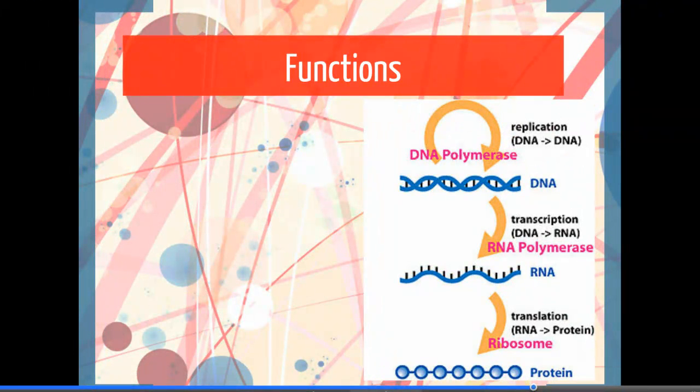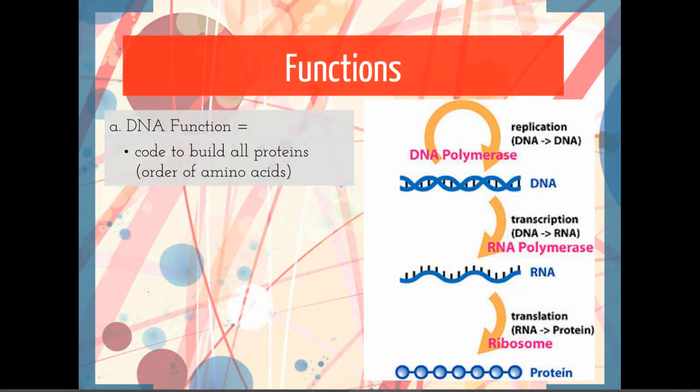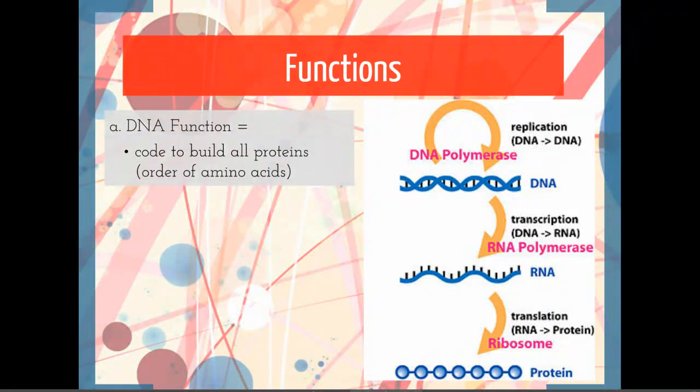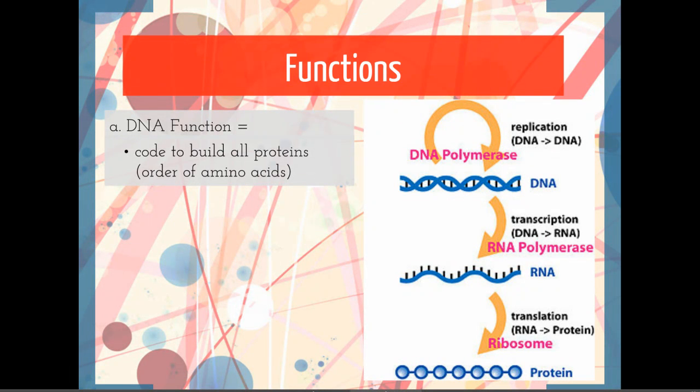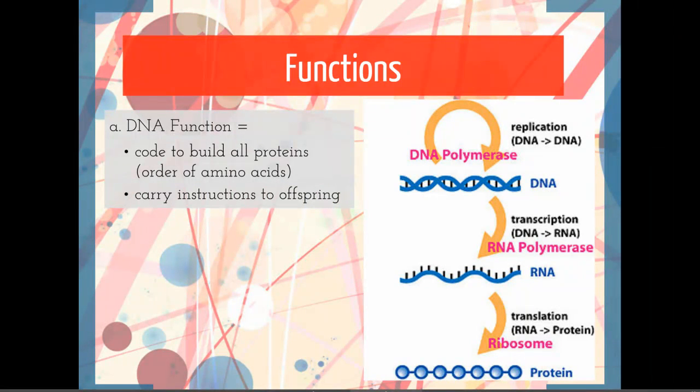When we look at the function of DNA and RNA, DNA is going to be the code to build all the proteins. We said that a protein is an order of amino acids folded into a three-dimensional shape. Well, who determines what order those amino acids are in? That's the DNA. The DNA is also going to carry instructions from the parent to the offspring.